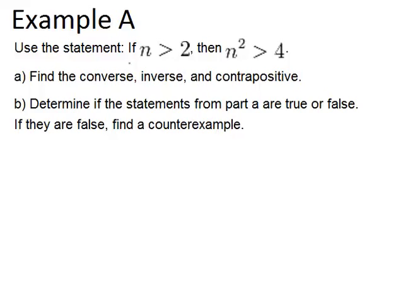Let's look at the original statement: if n is greater than 2, then n squared is greater than 4. Let's first think about whether that is true. If a number is greater than 2 and you were to square it, would that be greater than 4? This is true — you could prove it by squaring both sides of the inequality. Now we should find the converse, inverse, and contrapositive to see if those are also true.